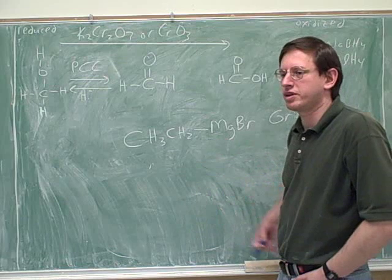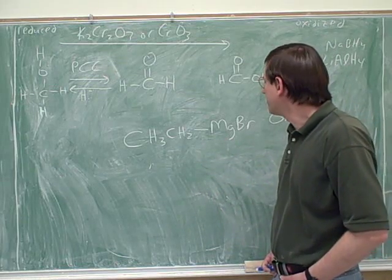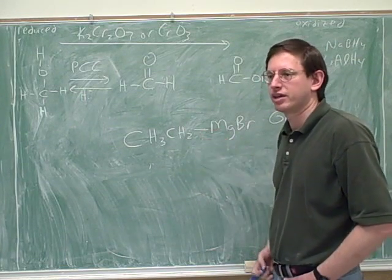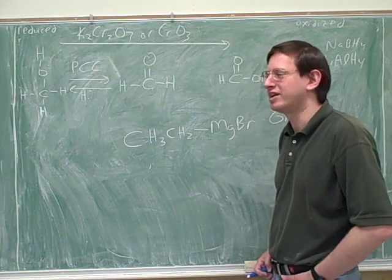Okay, so let's think about what we can do with this Grignard here. Let's see if we can predict how this would behave. Well, would you consider this bond here to be covalent or ionic? Ionic. Why is that? Because metal and non-metal. Yeah, metal and non-metal.